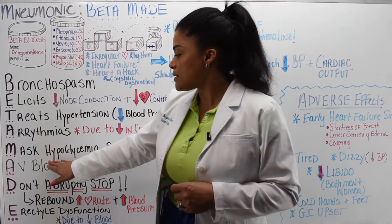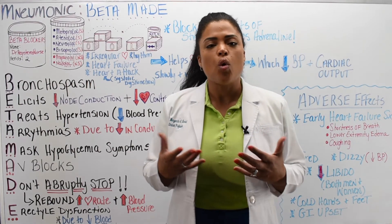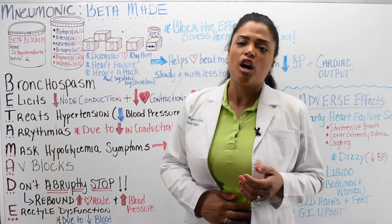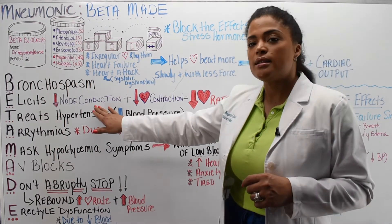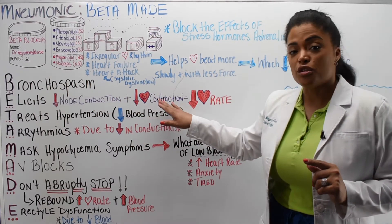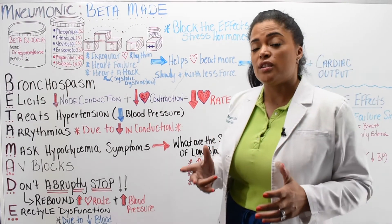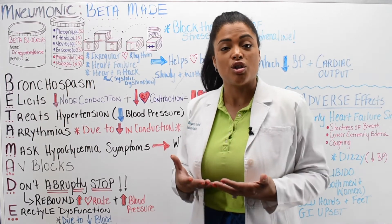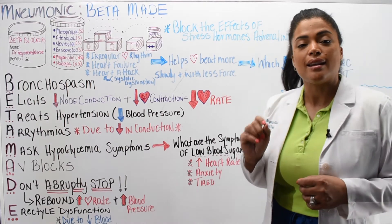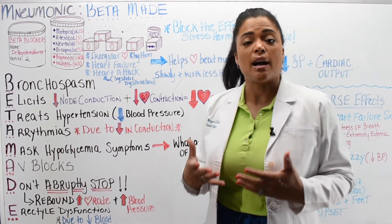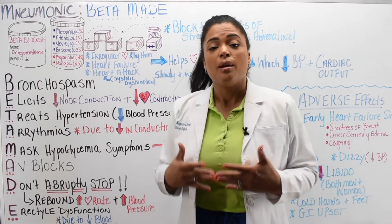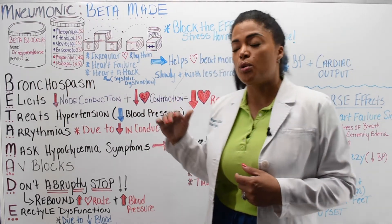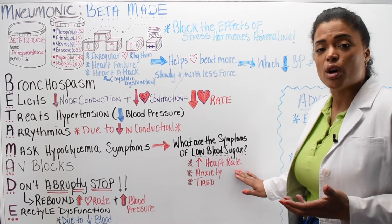M is for masks hypoglycemia symptoms. When you are hungry or your blood sugar is low, you feel tired, your heart rate goes up, you may get a headache and hunger pains. Because a beta blocker decreases conduction, which decreases contraction and decreases heart rate, a diabetic patient won't be able to experience the tachycardia symptom of low blood sugar. The beta blocker masks that symptom. It's very important to let diabetics know to check their sugars regularly, because they won't be able to tell if their symptoms are from low blood sugar or the beta blocker.